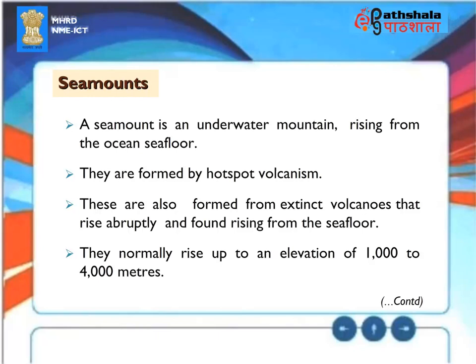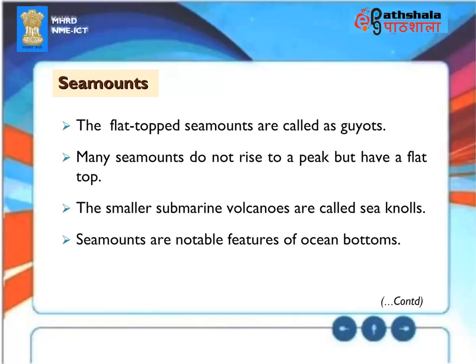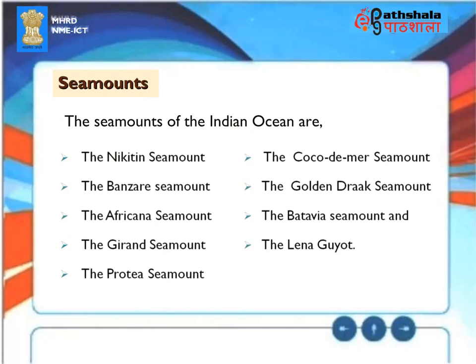Sea Mounts. A seamount is an underwater mountain rising from the ocean floor, formed by hotspot volcanism or from extinct volcanoes rising abruptly from the seafloor. They normally rise to an elevation of 1,000 to 4,000 meters. Flat-topped seamounts are called Guyots. Smaller submarine volcanoes are called sea knolls. The seamounts of the Indian Ocean include the Nikitin, Banzare, Africana, Girand, Protea, Cocos-Keeling, Golden Rock, Batavia seamounts, and the Lena Guyot.